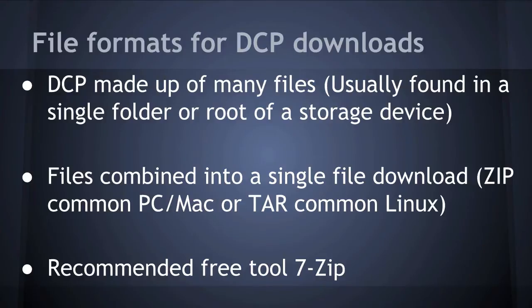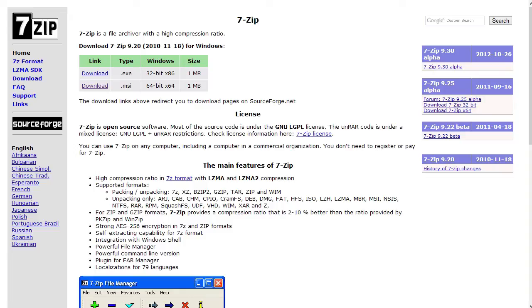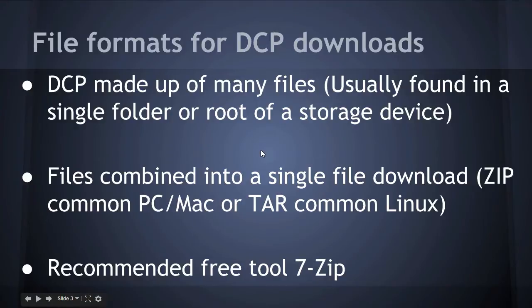File formats for DCP downloads: a DCP is made up of many files, but when you're doing a download, those files have to be combined into a single file — usually a zip file or a tar file. Zip files are more common on PC and Mac, and tar files are usually more commonly made on Linux. I recommend using a tool called 7-Zip — that's 7-zip.org. Just download the version you need for your version of Windows, and that will give you access to all the file formats you could ever want to extract from the internet.